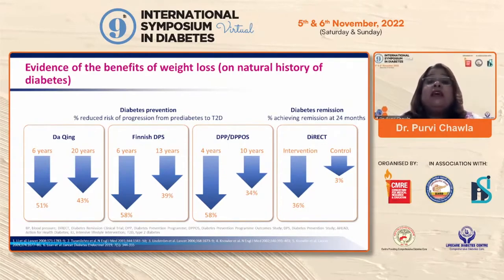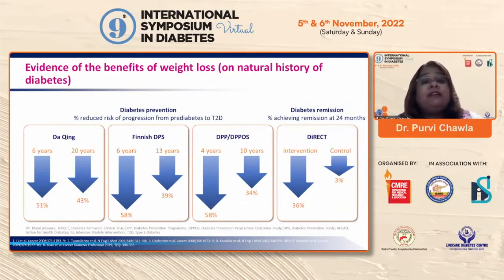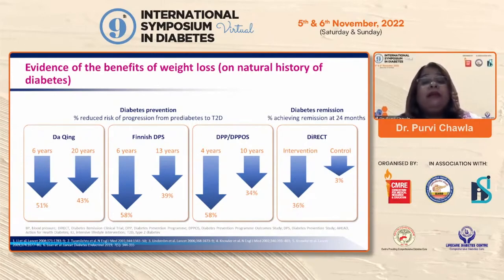The Look AHEAD trial evaluated whether weight loss benefits had any effect on cardiovascular outcomes. Even though CV benefits were not demonstrated, it was very heartening to see the reduction in weight, reduction in HbA1c, reduction in triglycerides, cholesterol, and blood pressure, along with a lot of increase in healthy lifestyle behavior among participants.